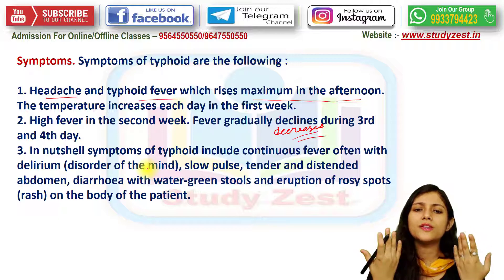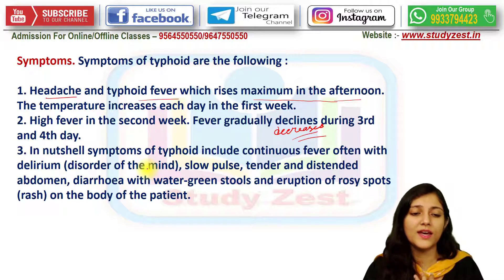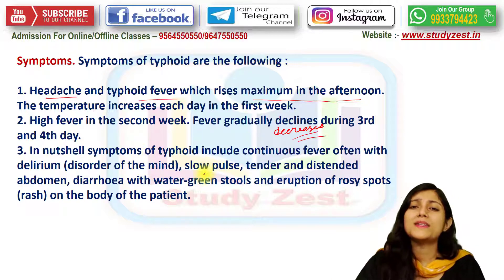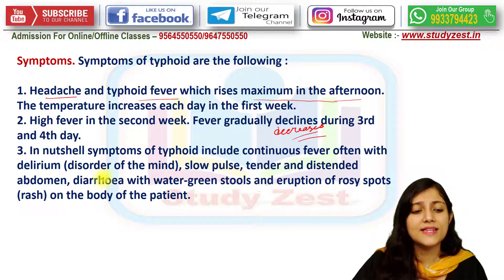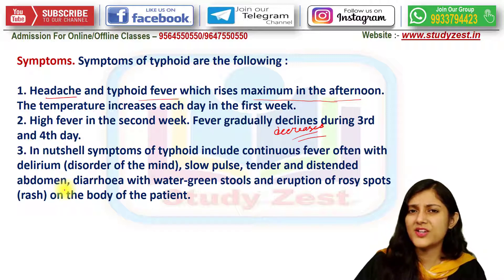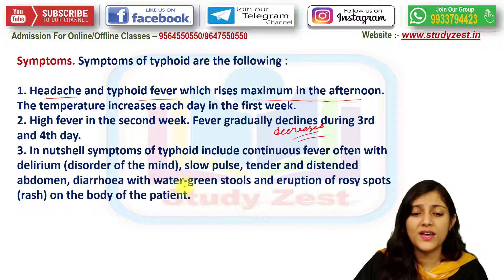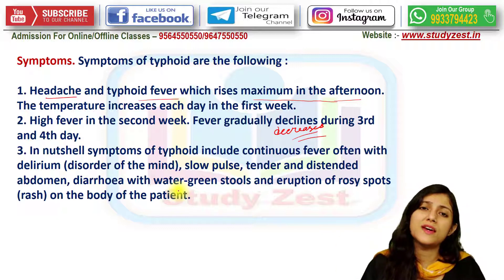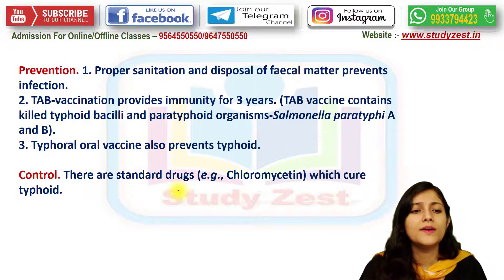There is also a slow pulse rate, tender and distended abdomen, abdominal pain, and loose watery or green stools — similar to diarrhea. An eruption of rosy spots or rashes can appear on various parts of the body. These are all symptoms related to typhoid along with the fever and headache.